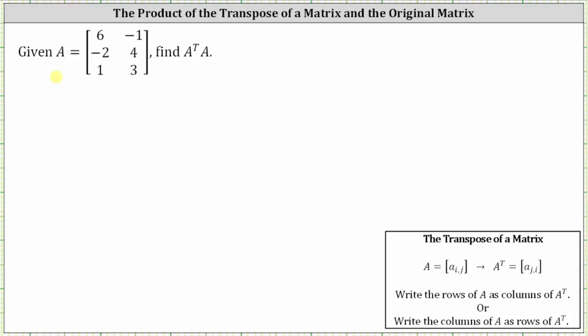We are given matrix A and asked to find A transpose times A. Notice matrix A is a three by two matrix because it has three rows and two columns.